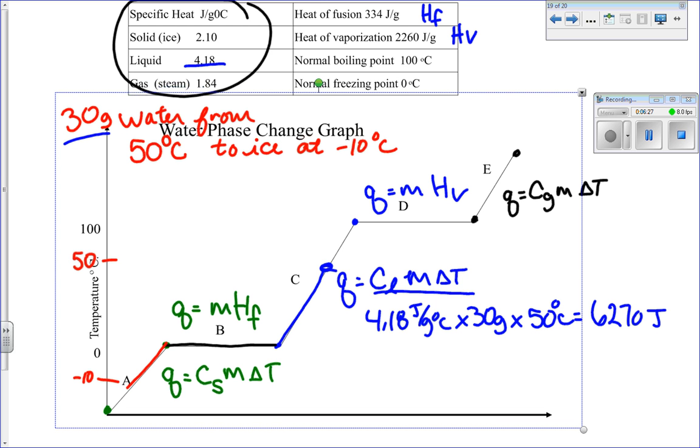So then the next step is I'm going to look at this little freezing line segment. So what's happening here is it tells me that, oh, it's MHF. Well, I know M, M is still the same amount. M is still 30 grams. And I know from up here in the chart, HF is 334. It tells me it takes 334 joules to melt 1 gram, but I have 30 grams to melt. So if I then multiply 30 times 334, I get 10,020 joules.